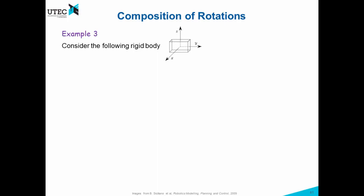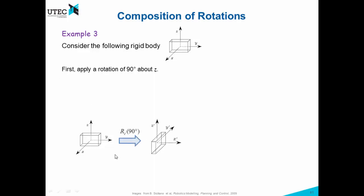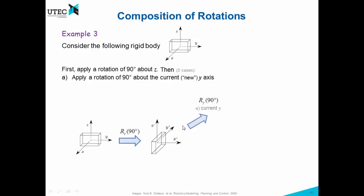Let's consider another example. We have a rigid body and apply first a rotation of 90 degrees about z — so x goes here and y goes here. Now we consider two cases. In the first case we apply a rotation of 90 degrees about the current or new y axis, y prime. If we apply this rotation, z will point to the right and x will point down, as you can see in the picture. Since we applied this to the new y axis, we have to do a post-multiplication: first z, then y.